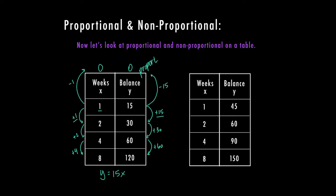If I want to go through the same steps on this other table on the right, 45 to 60 is plus 15, 60 to 90 is plus 30, 90 to 150 is plus 60. Again, the other side is also not increasing at the same rate. But I can do the same thing. So 15 divided by 1 is 15, 30 divided by 2 is 15. And so on.